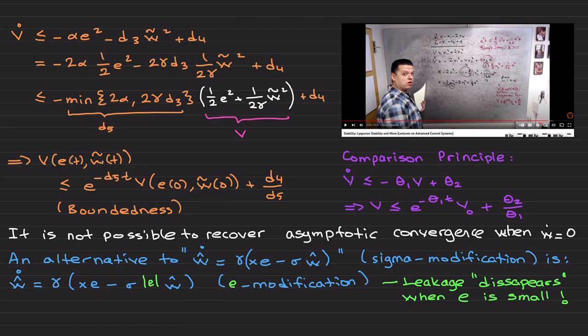In contrast to the projection operator proof, it is not possible here at all to recover asymptotic convergence when w dot is zero. Although it is intended to drive error to smaller values, unlike a projection operator, since it is not possible to recover asymptotic convergence with sigma leakage modification when w dot is zero, an alternative approach to sigma modification is e-modification.